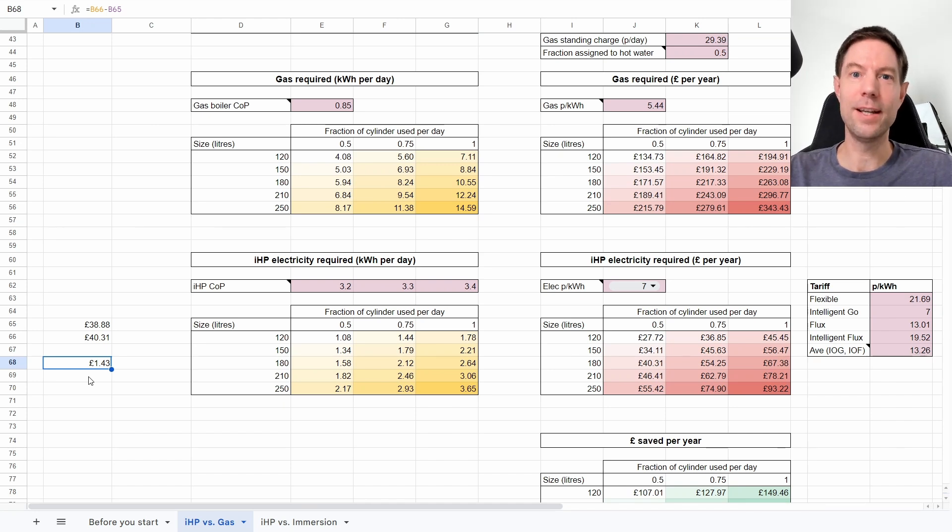So you can see why based on this calculation I'm pretty happy to accept the fact that our cylinder is installed in the garage and it really won't make very much difference at all to the amount of energy we require and the amount of cost it takes to heat that cylinder up, in addition to what it would have been if it had been installed in the airing cupboard.